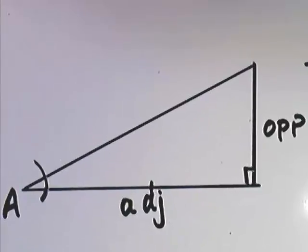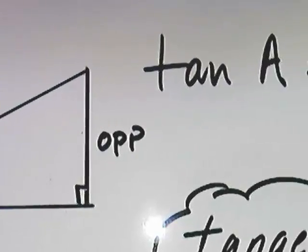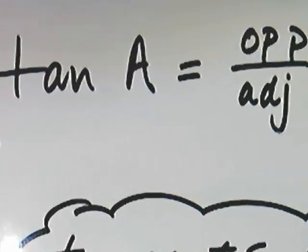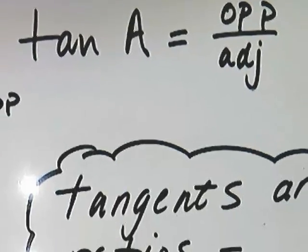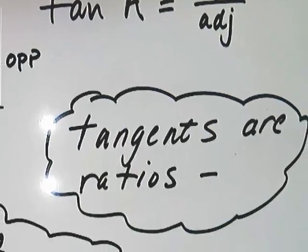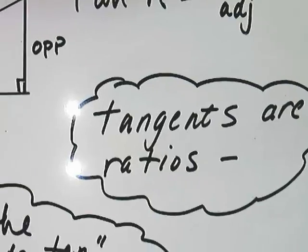So in summary, for a right angle triangle, the tangent of angle A is its opposite divided by the adjacent. Remember, tangents are ratios. They are not angles. They are not lengths. They are ratio of lengths. In this case, the tangent is the ratio of the opposite side over the adjacent side.